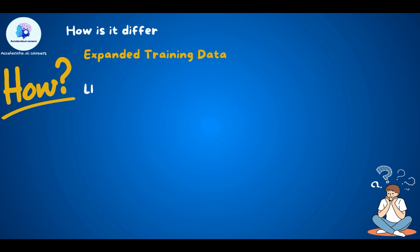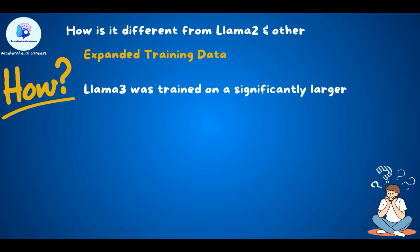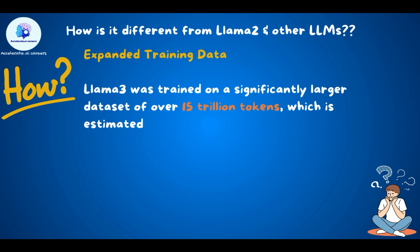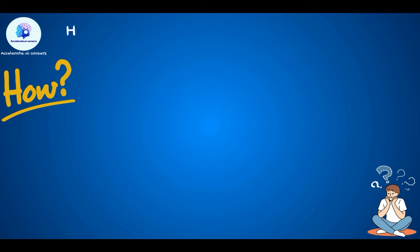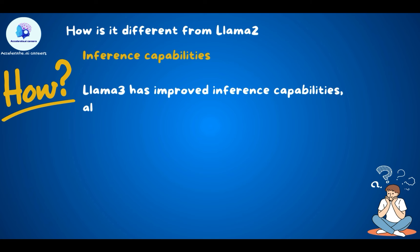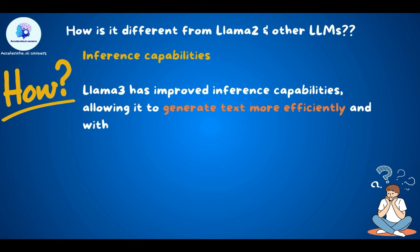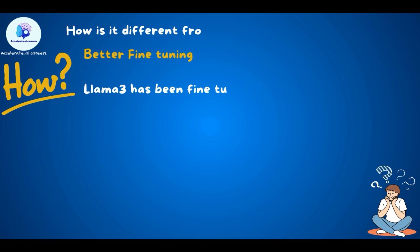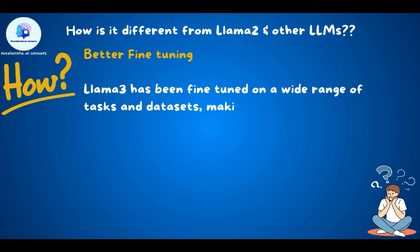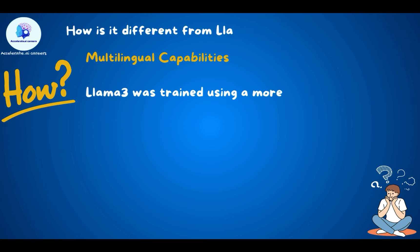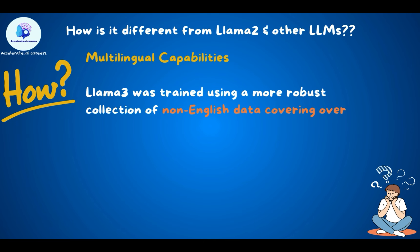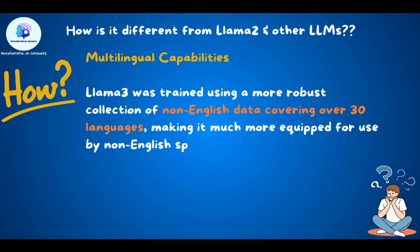LAMA 3 has significantly expanded training data — it was trained on over 15 trillion tokens, estimated to be around seven times larger than the LAMA 2 dataset, and includes four times more code. This allows LAMA 3 to respond to a wider variety of queries. It also has improved inferential capabilities with lower latency, is fine-tuned on a wide range of tasks and datasets, and was trained on robust non-English data covering over 30 languages.